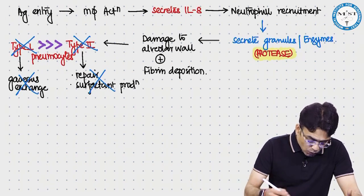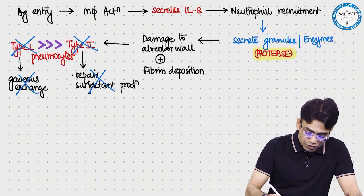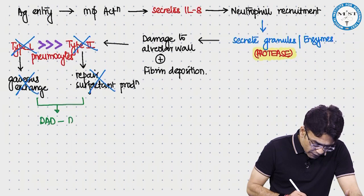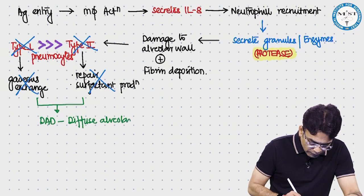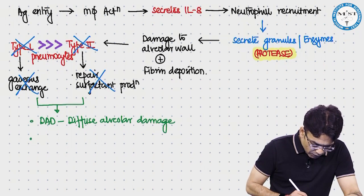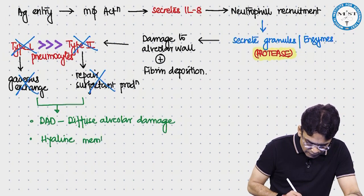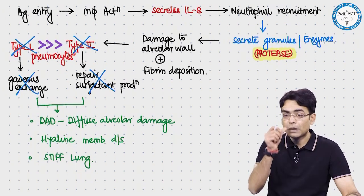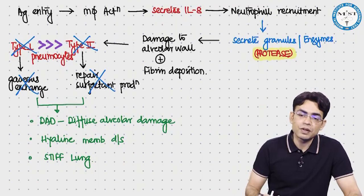With no gaseous exchange, no repair, and no surfactant production, this condition is called diffuse alveolar damage - DAD. It leads to hyaline membrane disease and stiff lung. This completes the whole pathogenesis of ARDS.